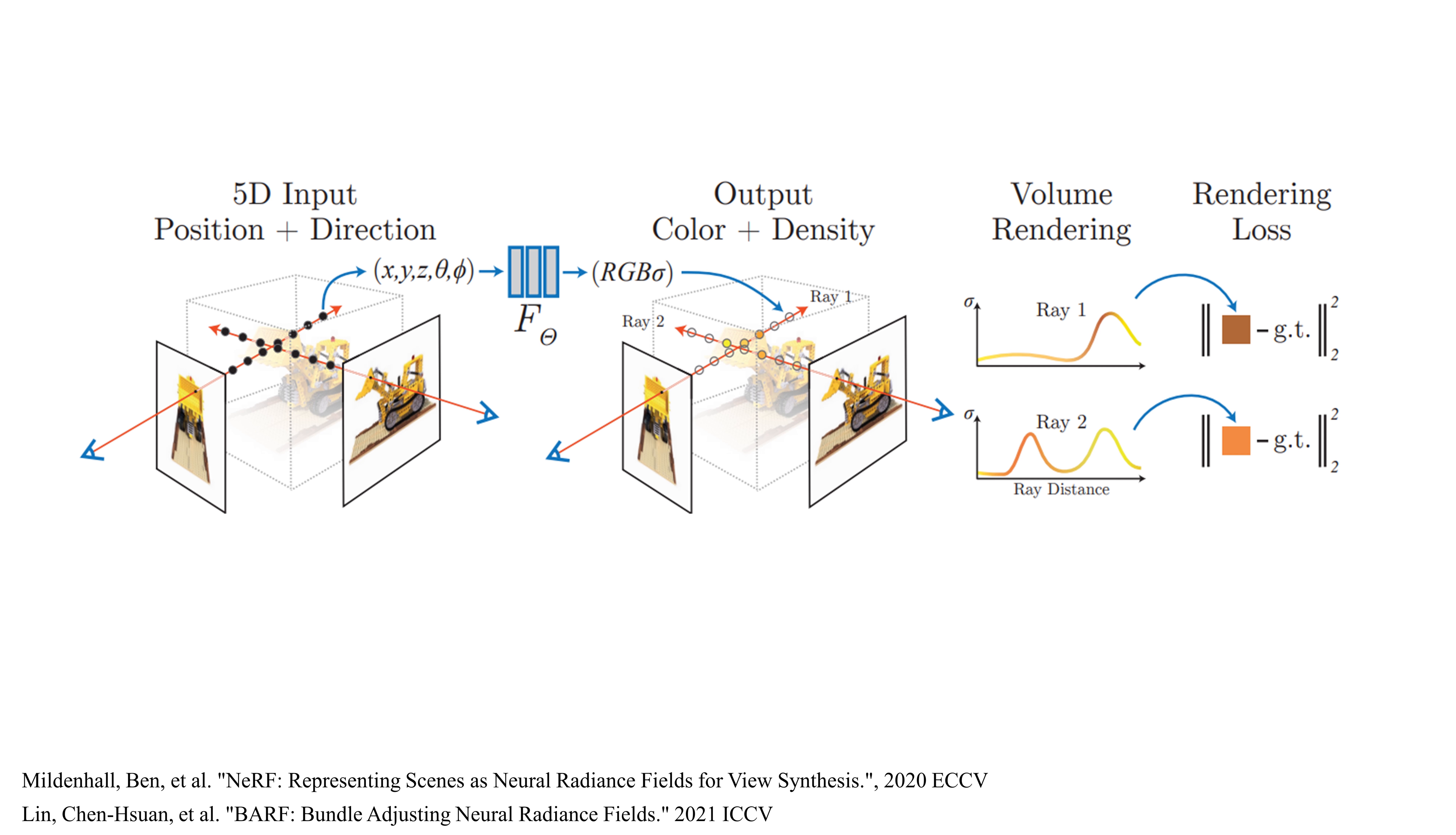This is an overview of NeRF. Given an image and its corresponding camera pose, many rays are shot from the camera. Then, many points are sampled along the ray and the points represent 3D coordinates. After this sampling, colors and volume densities of these points are obtained by inputting the 3D coordinates and 2D view directions to an MLP network.